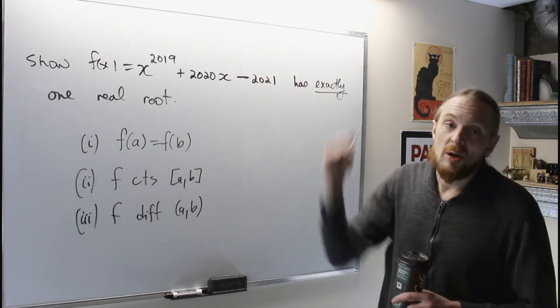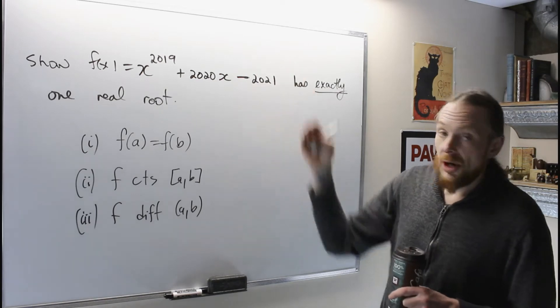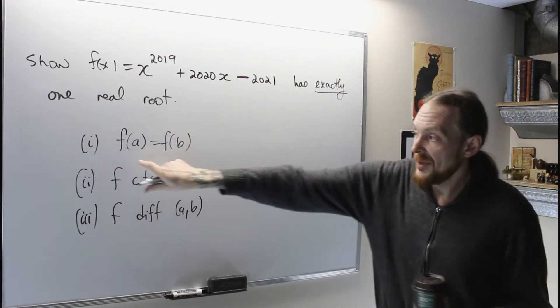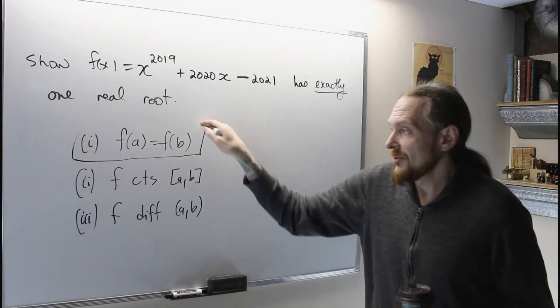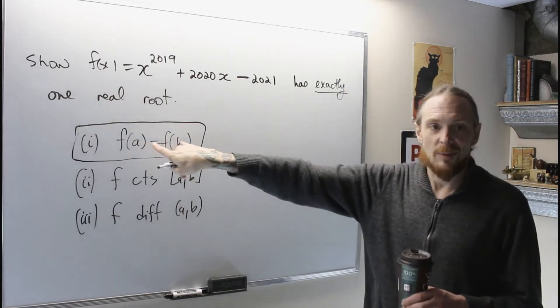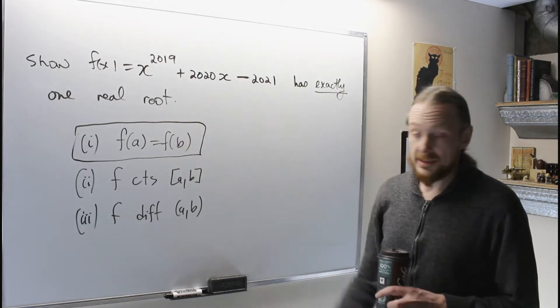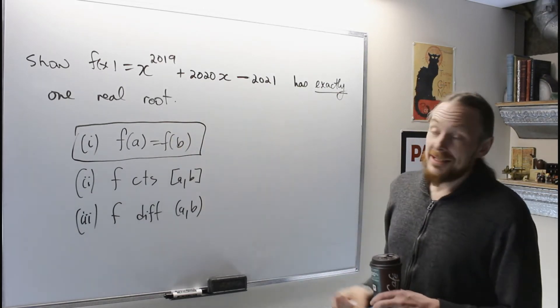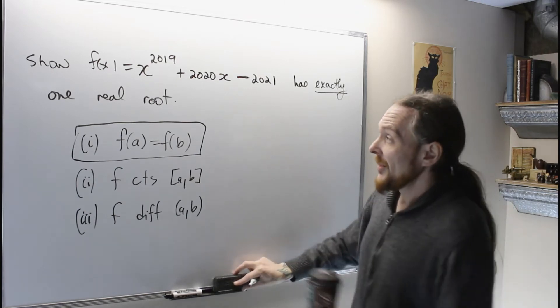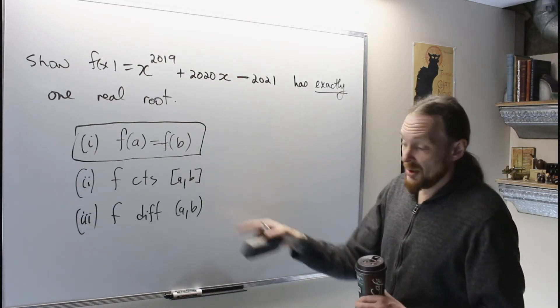Our function is a polynomial, it's continuous on R, it's differentiable on R, and here's the clever idea of how to use Rolle's theorem, because we are going to assume two roots. That's where we get the f of zero equals the other root, they're going to both equal zero. So, these conditions have to be satisfied for Rolle's theorem. Because our function is a polynomial, it's continuous on all intervals, and differentiable on all intervals.